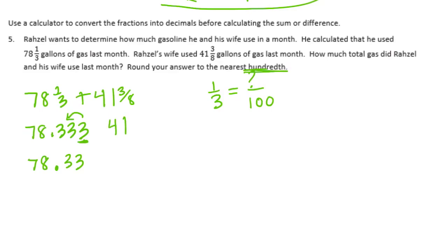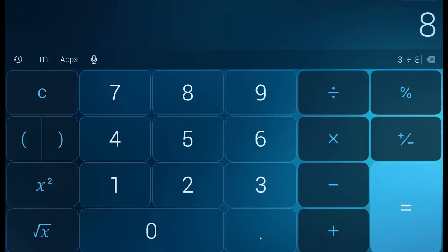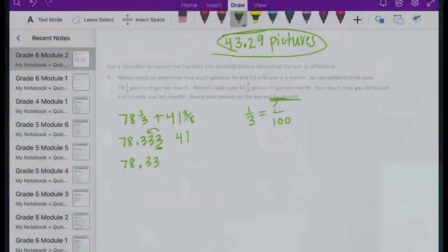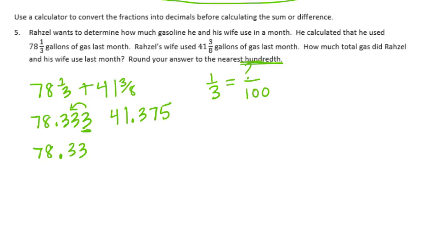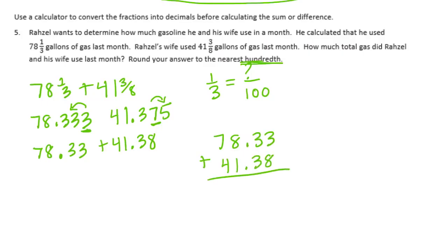Now let's do 41 and 3 eighths. We're going to do 3 divided by 8 and get 375 thousandths. We need to round to the nearest hundredths — here's the hundredths place, we look at the 5, so this becomes an 8 — giving us plus 41 and 38 hundredths. Now let's add them together: 3 plus 8 is 11, carry the 1; 1 plus 3 is 4 plus 3 is 7; 8 plus 1 is 9; 7 plus 4 is 11. So we get 119 and 71 hundredths gallons of gas.